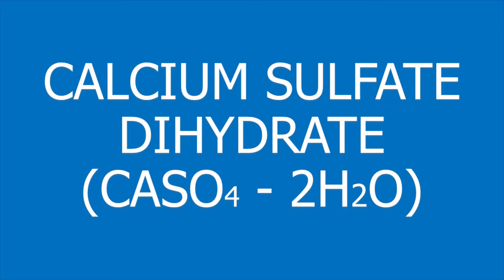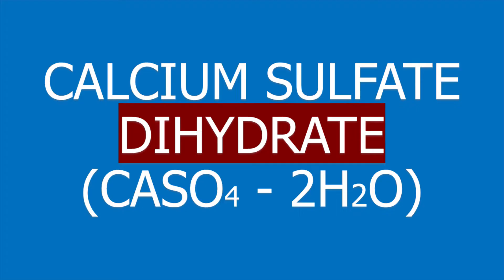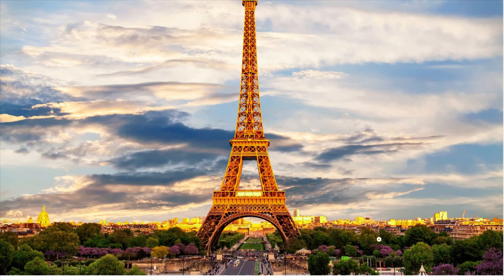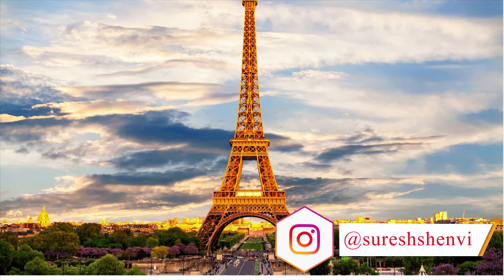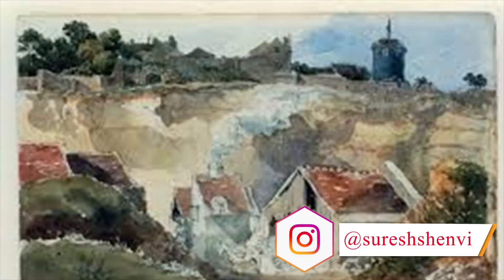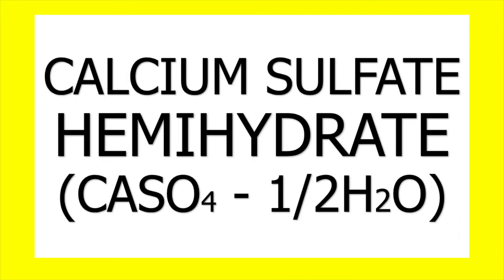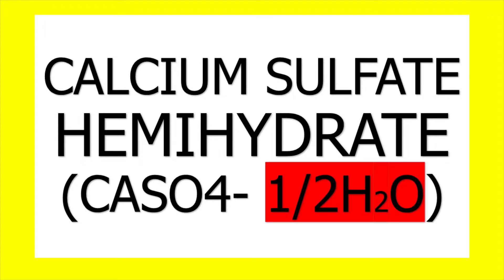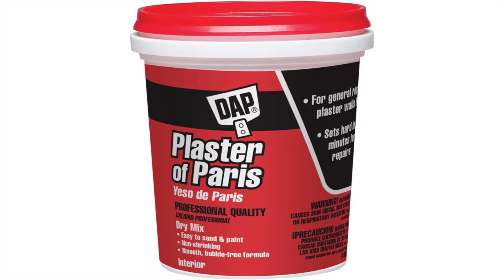This is calcium sulfate dihydrate, which was first discovered in Paris. In Paris, they used to burn this in order to partially remove the water from calcium sulfate dihydrate to get a product called calcium sulfate hemihydrate, commonly known as plaster of Paris, which you all must have heard before joining dentistry.